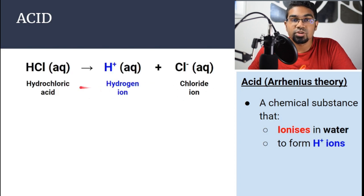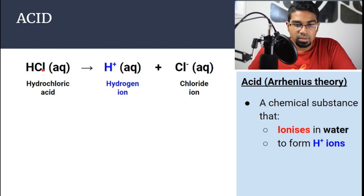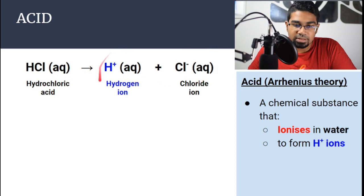For example, hydrochloric acid. Hydrochloric acid is HCl. When we dissolve it in water, HCl will dissociate to form H+ ions as well as chloride ions. The key here is the H+ ions.